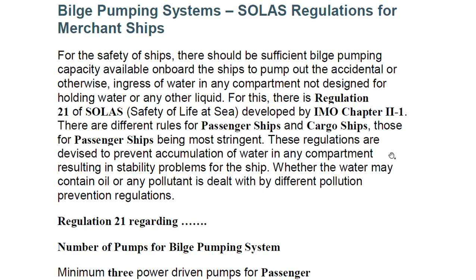Passenger ships and cargo ships are different, those for passenger ships being more stringent because there are more lives and more people travelling. These regulations are devised to prevent accumulation of water in any compartment resulting in a stability problem for the ship. We study damage stability and flooding of a compartment — that is why we have concepts like the margin line. Stability is directly proportional to our safety. Whether the water may contain oil or any pollutant is dealt with by different pollution prevention regulations.